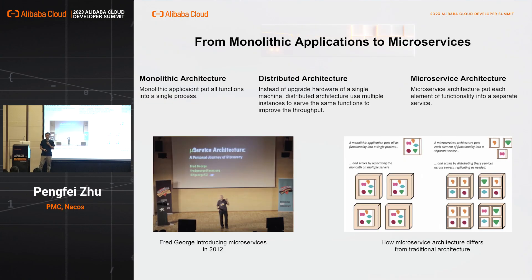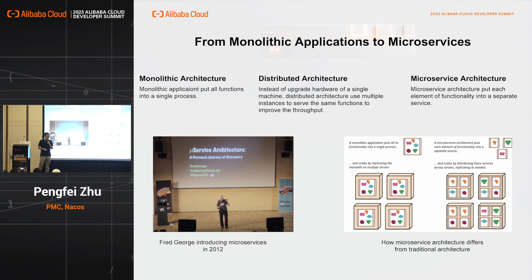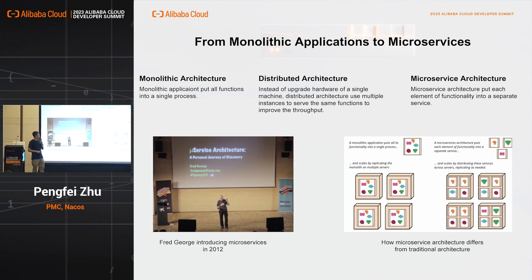To introduce Spring Cloud Alibaba, I think it's important to understand the concept of microservices. So at first, we have a monolithic architecture which runs all functions in a single process. It is suitable if the application scale is small because it's easy to maintain and upgrade for a single process. But as the traffic scale keeps increasing and growing...